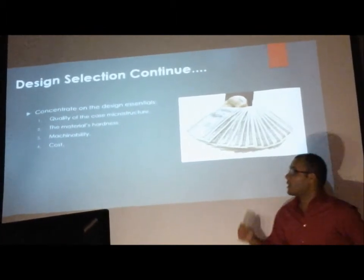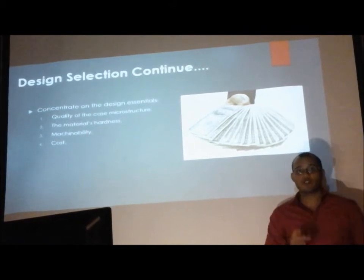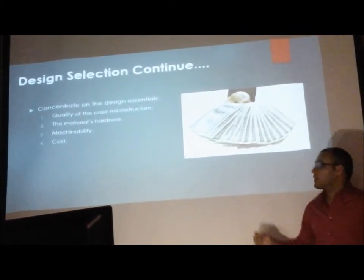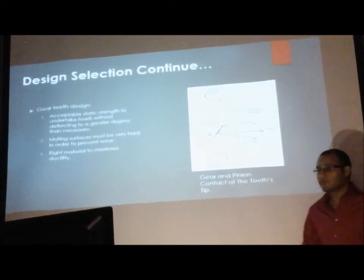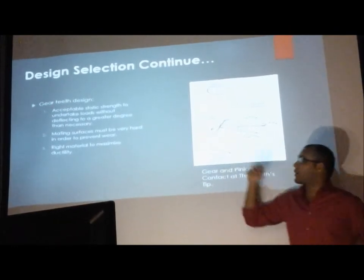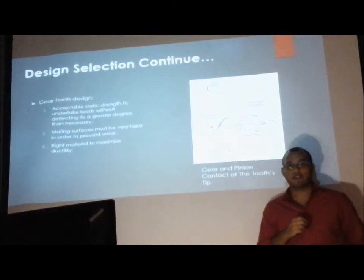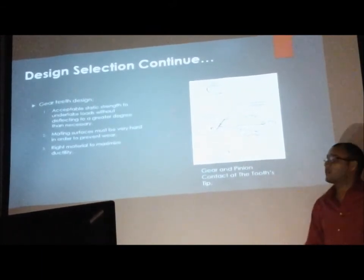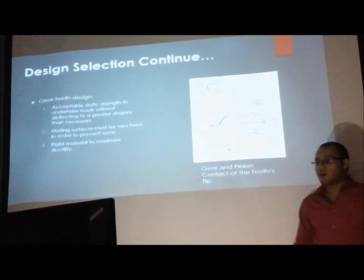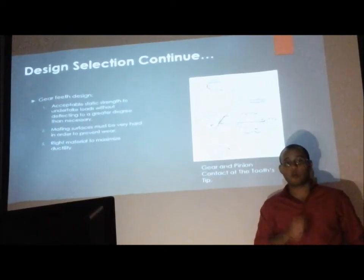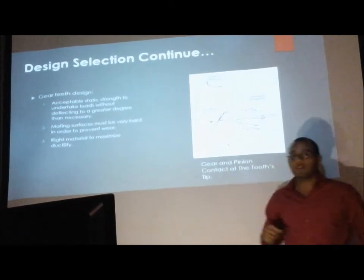The engineer must concentrate on the design essentials that include the quality of the case microstructure, the material's hardness, the machinability and most importantly the cost. The next important thing to do when designing the gear is to look at the teeth design. The teeth must have an acceptable static strength to undertake loads without deflecting to a greater degree than necessary. The major surfaces must be very hard in order to prevent wear and the material selection must maximize the teeth ductility.